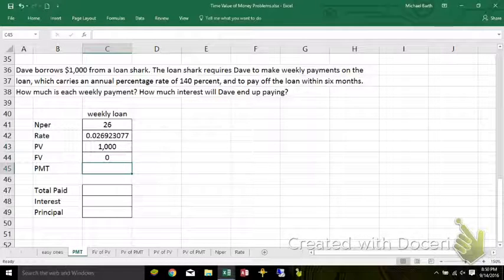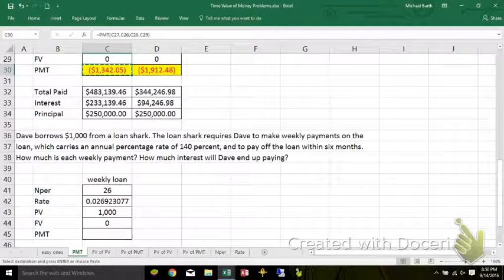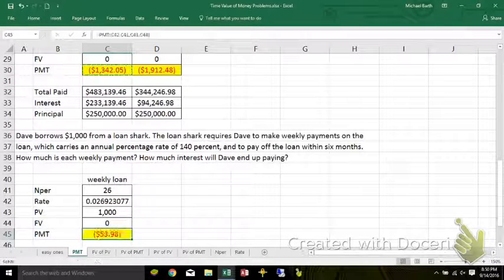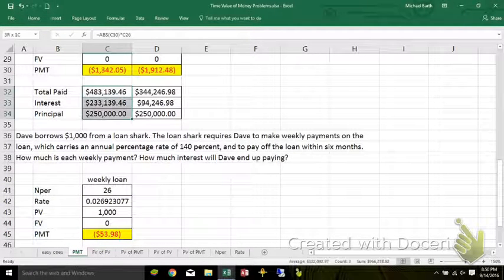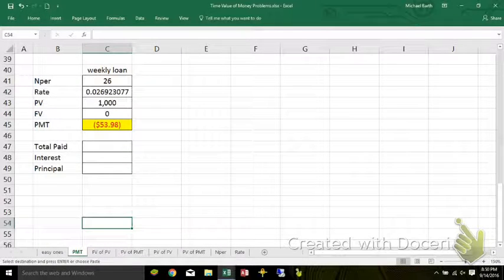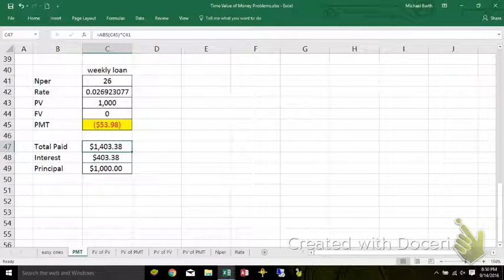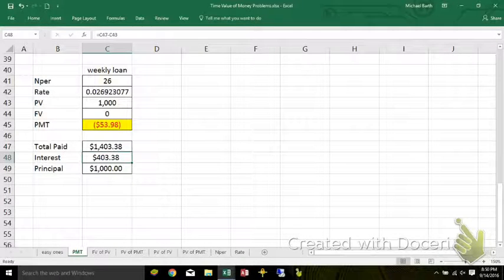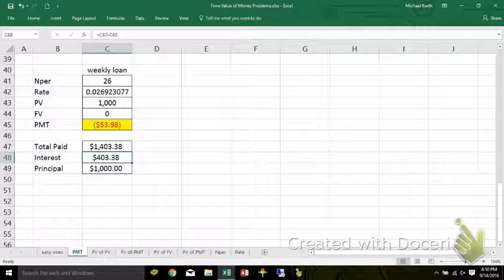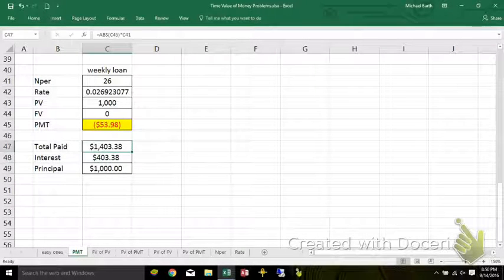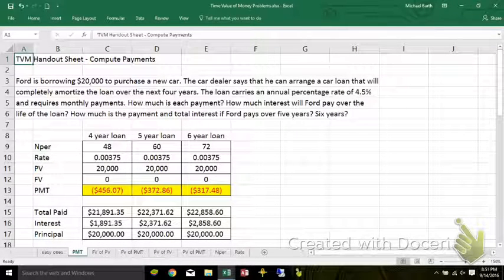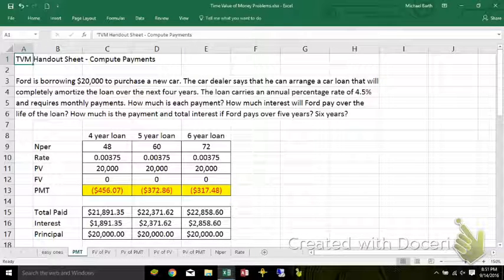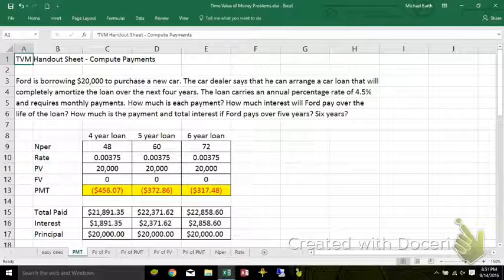That gives us a payment of $53.98. Well, that ain't bad. And I can just copy the rest of this stuff down. You'll pay back an extra $403.38 over the six-month period on your $1,000 loan. So, simple TVM problems that you run into on a day-by-day basis for solving for payments, for the periodic payment associated with various loans.